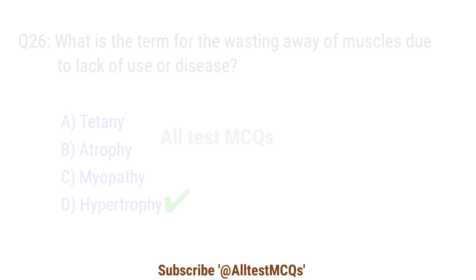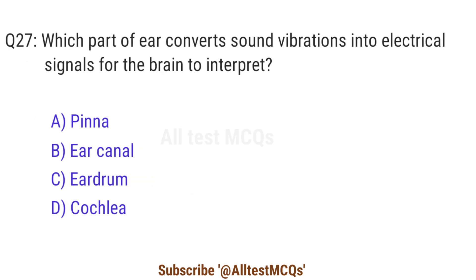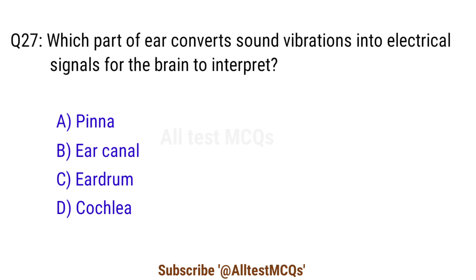Question 27. Which part of the ear converts sound vibrations into electrical signals for the brain to interpret? The right answer is option D. Cochlea.